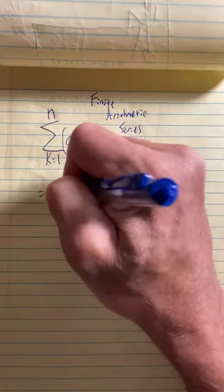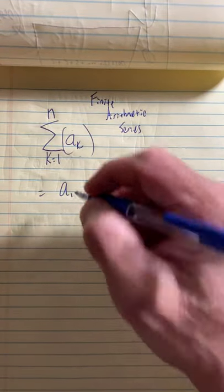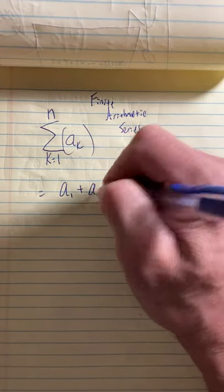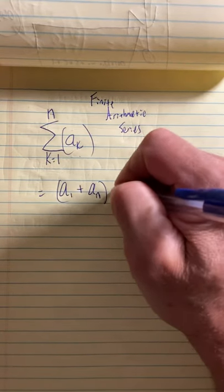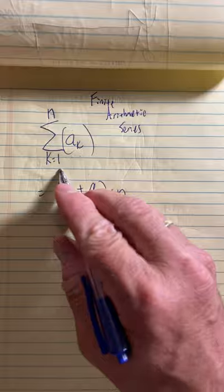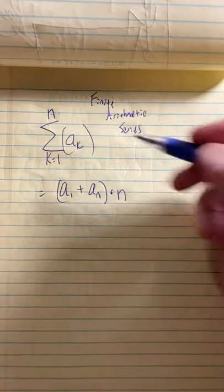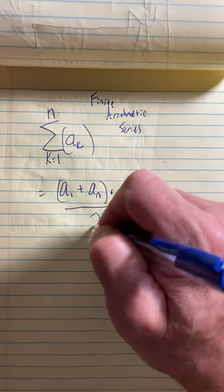So in a finite arithmetic series the formula is you take the first term just like Gauss did, add it to the last term. Then you multiply it by however many terms there are, so if you're starting at one and you end at n then there's n of them, and then you cut it in half.